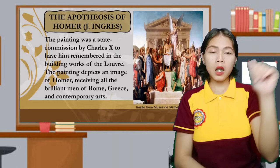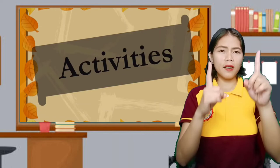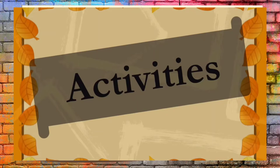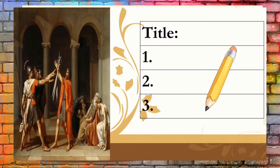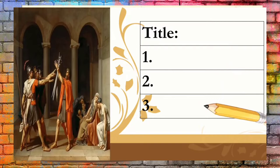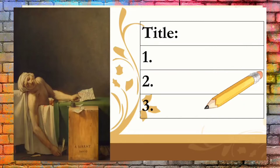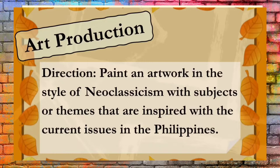Now that we have finished our lesson, let's test your knowledge and have activities. For your first activity, list down five distinct characteristics of the given paintings of Jacques-Louis David. You can also watch a short clip about Neoclassicism using the provided link. Then, identify the painting's title and describe its characteristics. For your next activity, you have an art production: paint an artwork in the style of Neoclassicism with subjects or themes inspired by current issues in the Philippines.